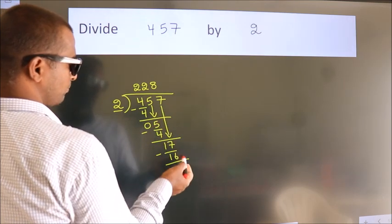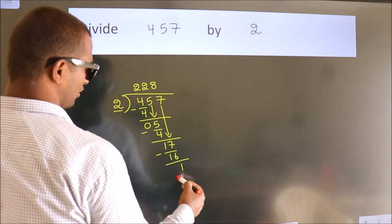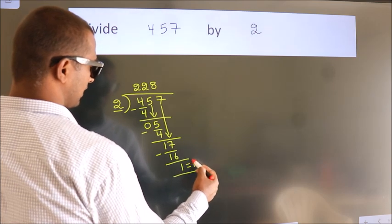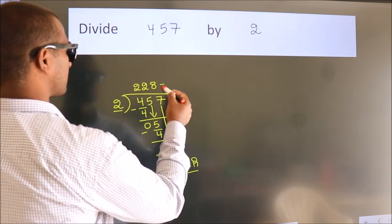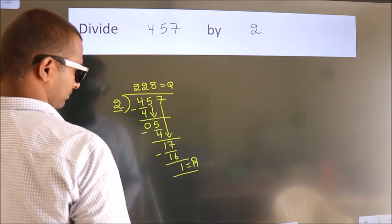No more numbers to bring it down. So, we stop here. This is our remainder. This is our quotient. Now, let's take a look back.